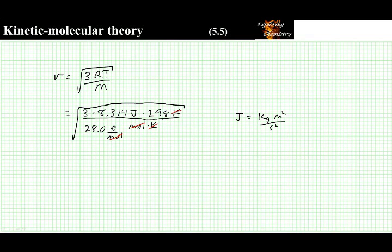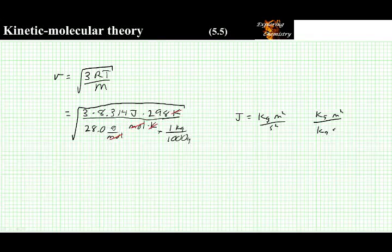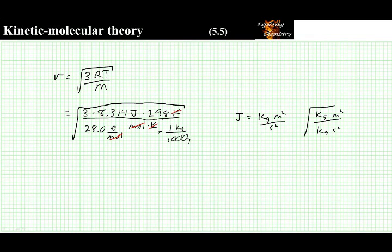So by multiplying and converting the denominator to kilograms, the units in the equation become kilogram meter squared per kilogram second squared, all square rooted.